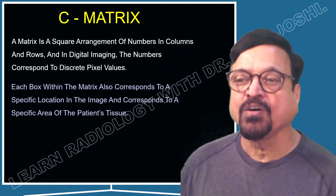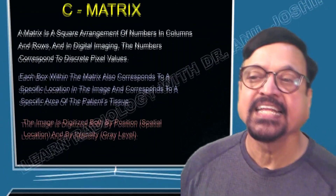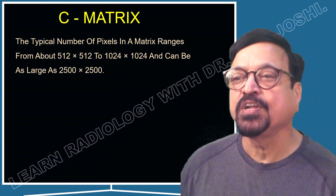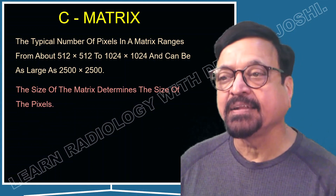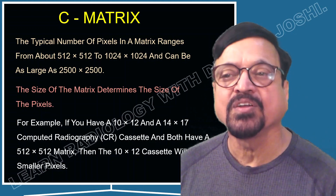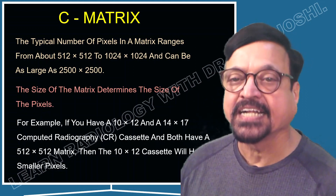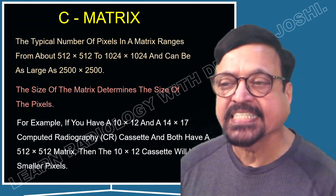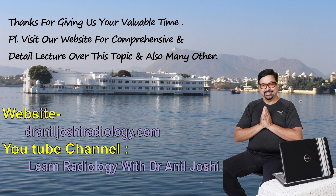In digital imaging, the numbers correspond to discrete pixel values. Each box within the matrix corresponds to a specific location in the image and to a specific area of the patient's tissue. The image is visualized by both position — spatial location — and intensity — gray level. The typical number of pixels in a matrix ranges from 512×512 or 1024×1024, and can be as large as 2500×2500. The size of the matrix determines the size of the pixel. For example, if you have a 10×12 and a 14×17 computed radiographic cassette, both with a 512×512 matrix, then the 10×12 cassette will have the smaller pixel size.